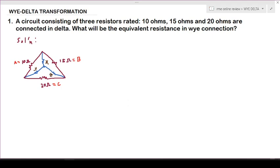We need to solve first for X, the resistance in the wye connection. We know that X equals the product of the adjacent delta connections, so that is A times B over the sum of the resistances in the delta connection: A plus B plus C.